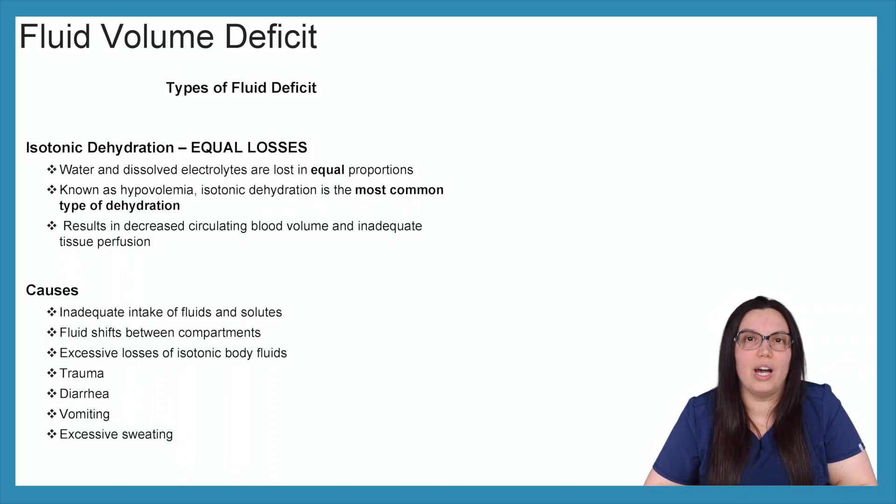So let's begin by looking at isotonic dehydration, meaning that there are equal losses. So water and dissolved electrolytes are lost in equal portions. Known as hypovolemia, I'm sure you've heard that before. Isotonic dehydration is the most common type of dehydration, and it results in a decrease of circulatory blood volume and an adequate tissue perfusion because of that loss of circulatory blood volume. So causes for this could be inadequate intake of fluids and solutes, fluid shifts between compartments that happens quite a bit, excessive losses of isotonic body fluids, trauma, diarrhea, vomiting, and excessive sweating.